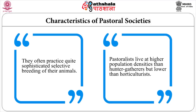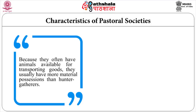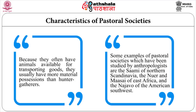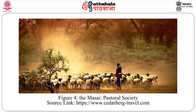Pastoralists live at higher population densities than hunter-gatherers but lower than horticulturists. Because they often have animals available for transporting goods, they usually have more material possessions than hunter-gatherers. Some examples of pastoral societies studied by anthropologists are the Sami of Northern Scandinavia, the Nuer and Maasai of East Africa, and the Navajo of the American Southwest. Figure 4 shows the Maasai, the pastoral society.